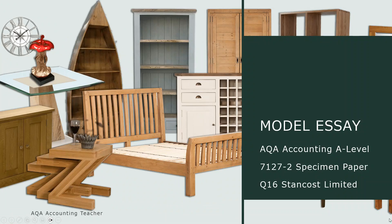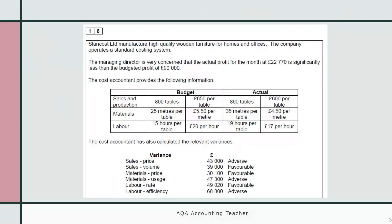Stan Cost Limited — this was from the specimen paper 7127-2. I've already done a video going through the process, unravelling the question and giving you some ideas as to how it should be structured, what things you need to include, what calculations you need to do. So I'm not going to go through all that again. This video is just to show you what the model answer might actually look like. So just a reminder about the question: Stan Cost Limited was about standard costing and variance analysis.